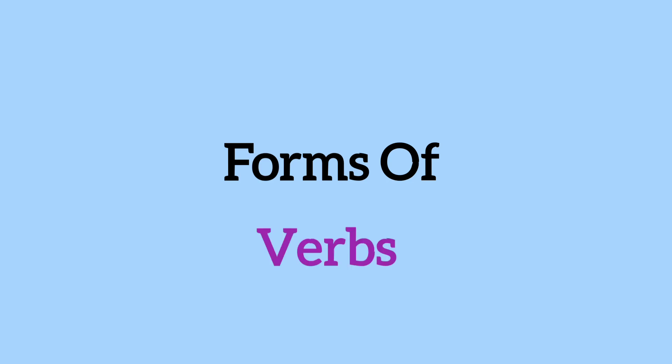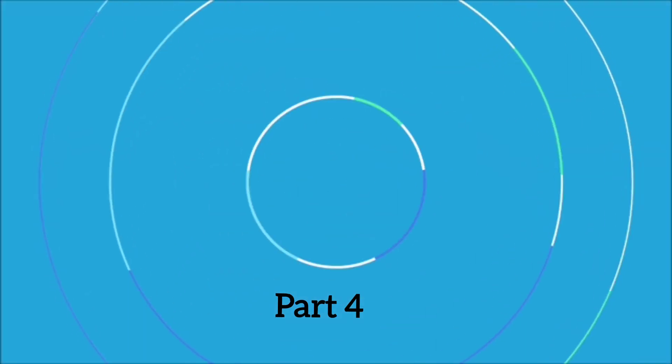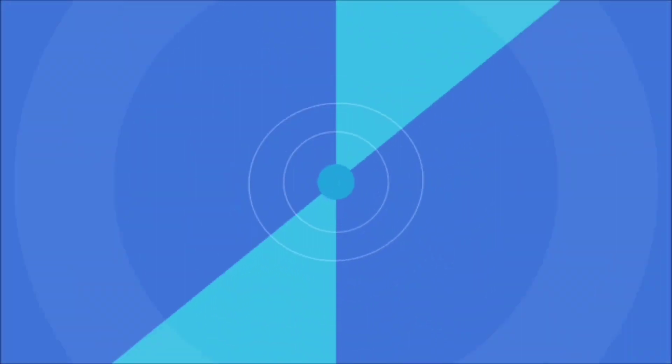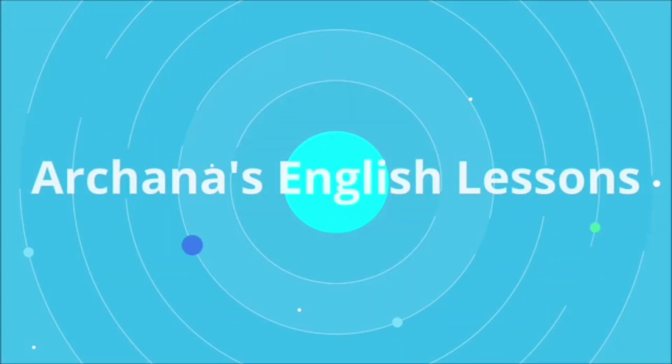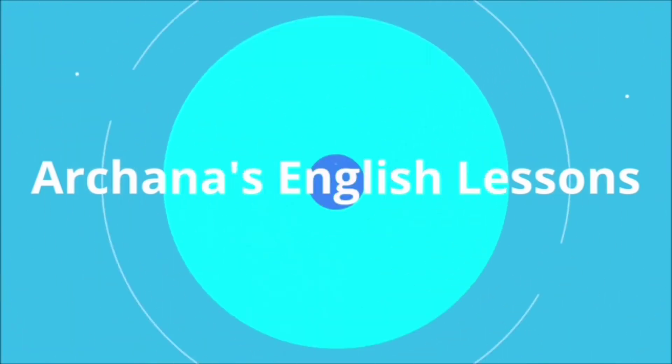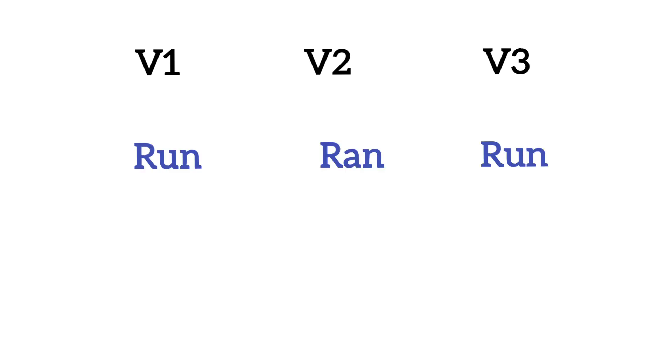Hello dear students, today we are going to do forms of verbs and this is the fourth part in this series. There are three forms of verbs — V1, V2 and V3, meaning first form, second form or third form.